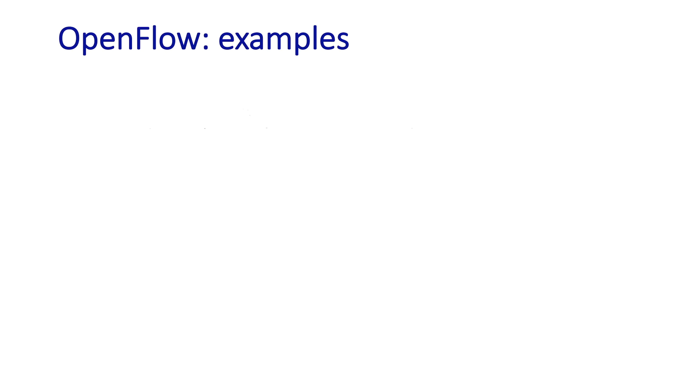We've seen that OpenFlow's match plus action rules allow us to do a lot more than just destination-based forwarding. So let's take a look at a few specific examples. In this first example here, this just shows that one can implement destination-based forwarding using OpenFlow. So in some sense, generalized forwarding can do everything that destination-based forwarding can do. In this example, datagrams destined to IP address 51.6.0.8 should be forwarded to router output port 6.